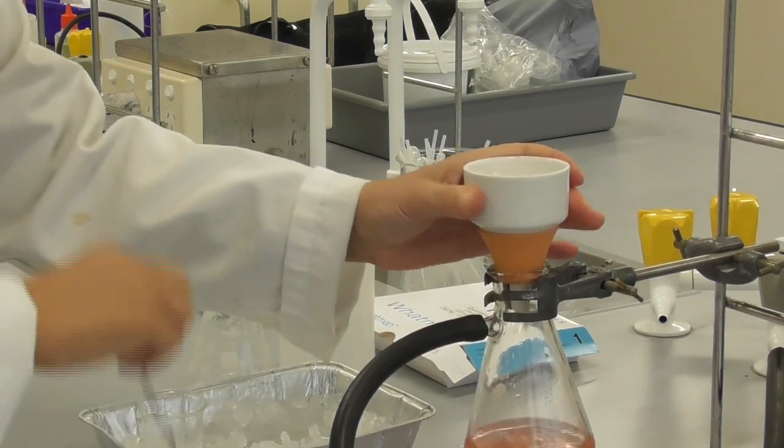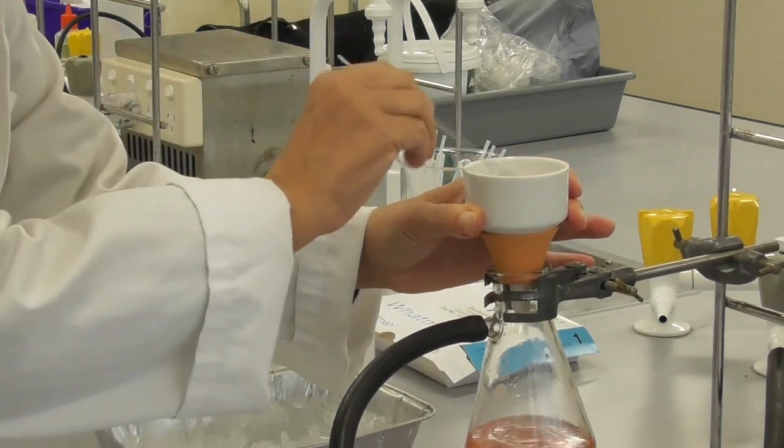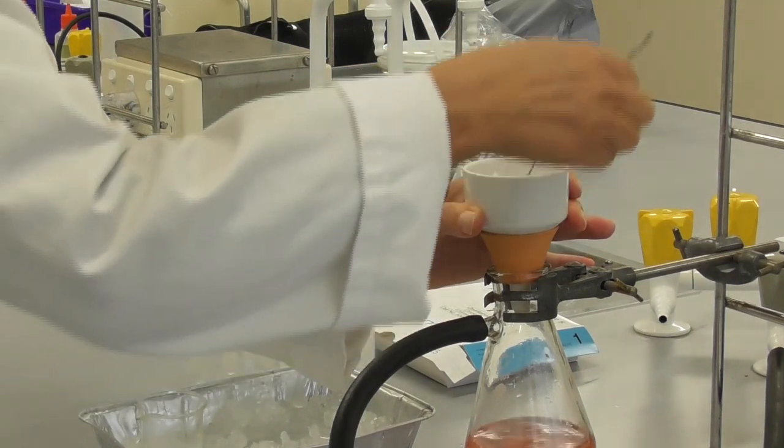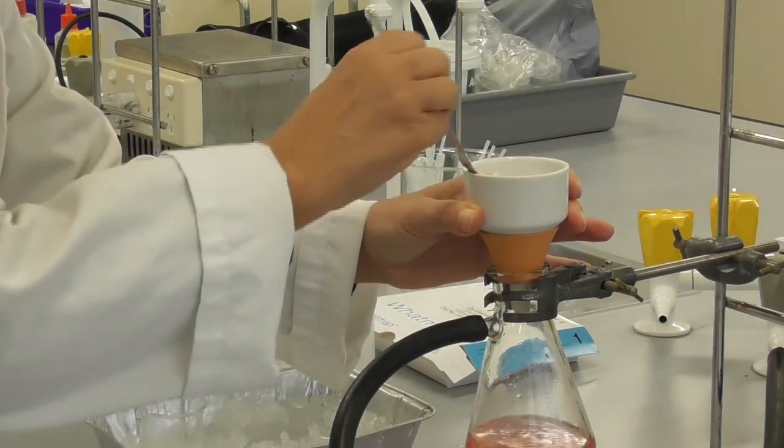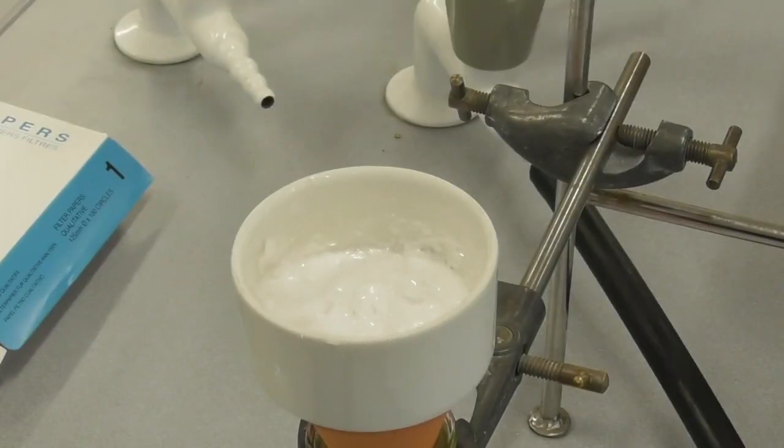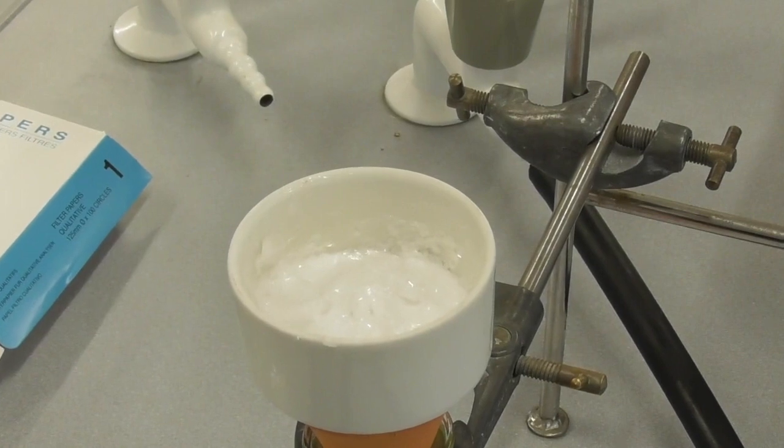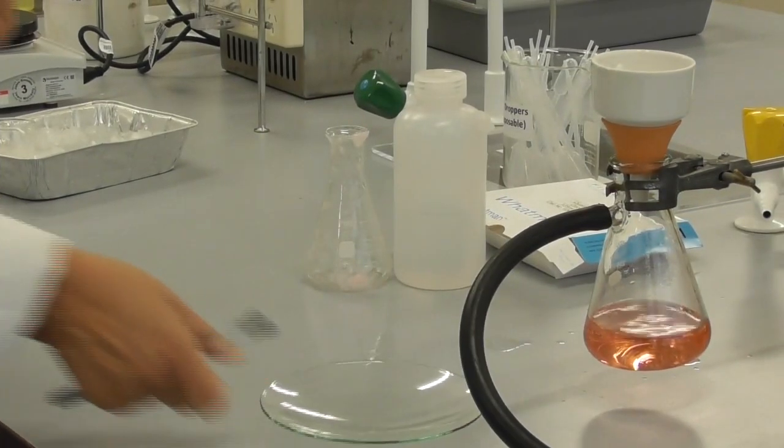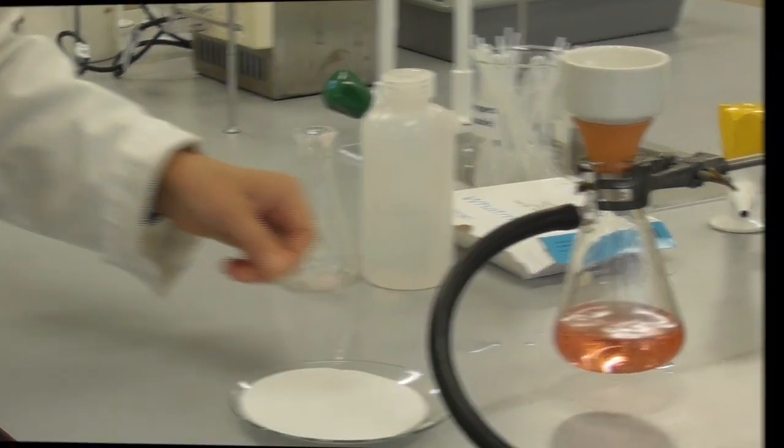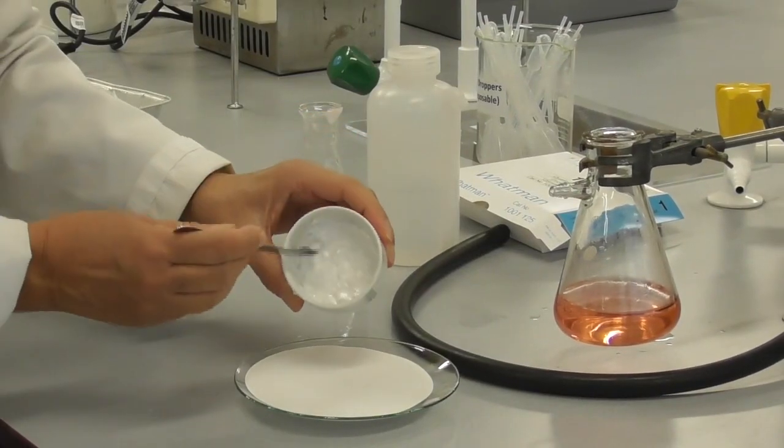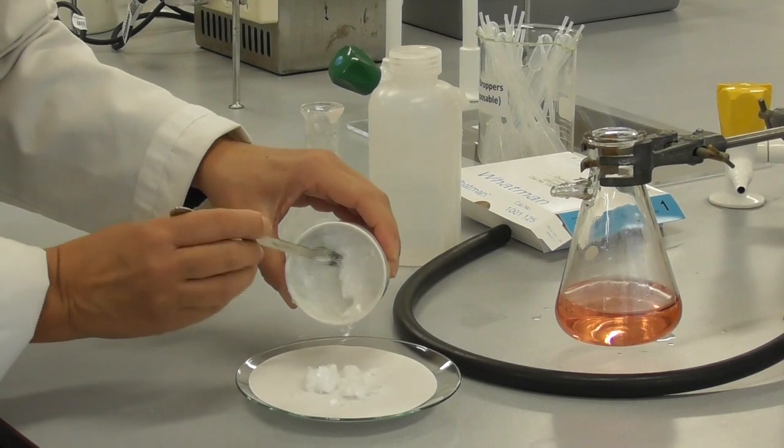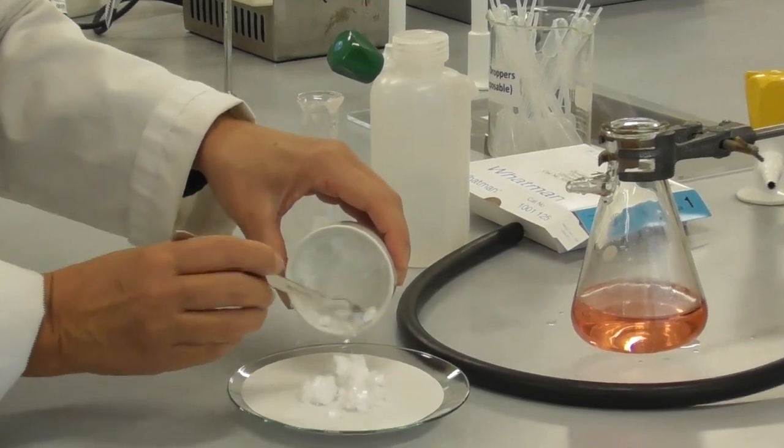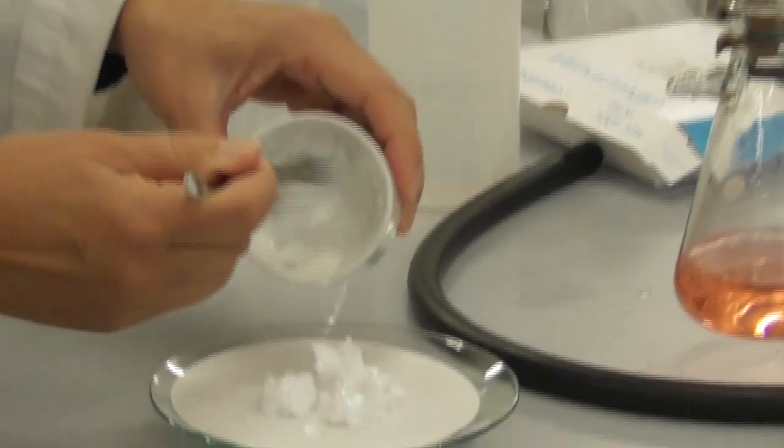We then re-apply the vacuum to suck the crystals dry and achieve fairly white, recrystallized benzoic acid this way. We get a watch glass and a large filter paper and then transfer the crystals from the buchner funnel onto the filter paper where we let them dry for a bit longer.